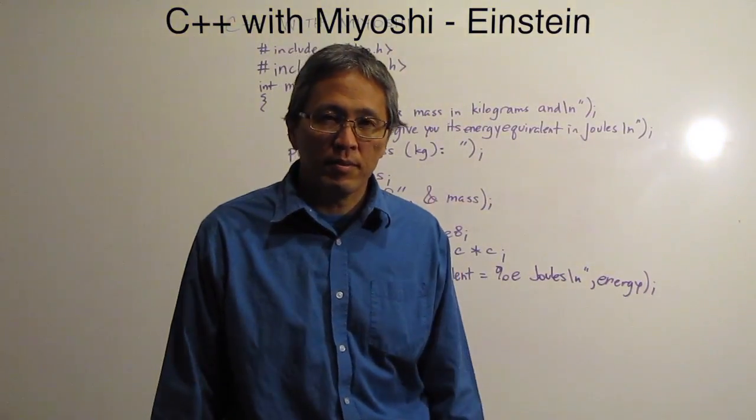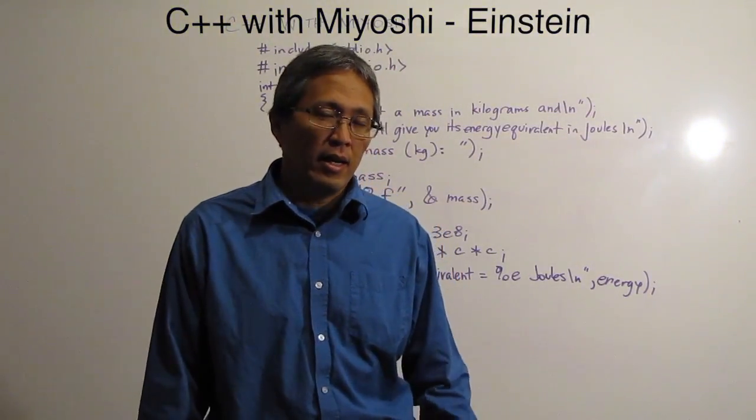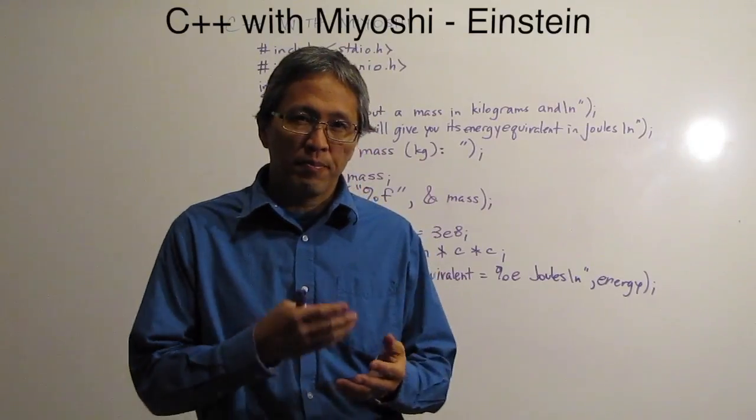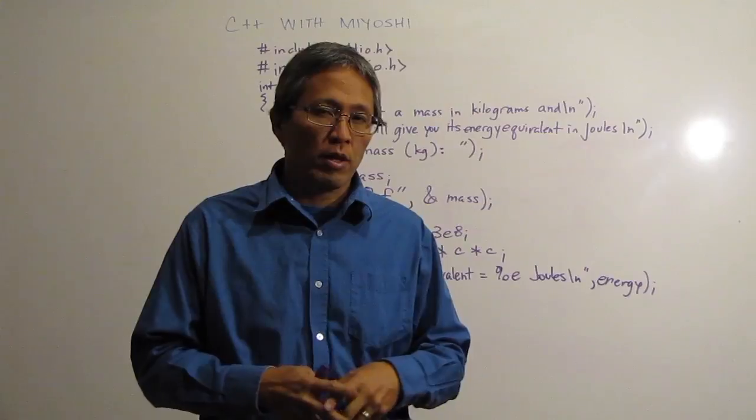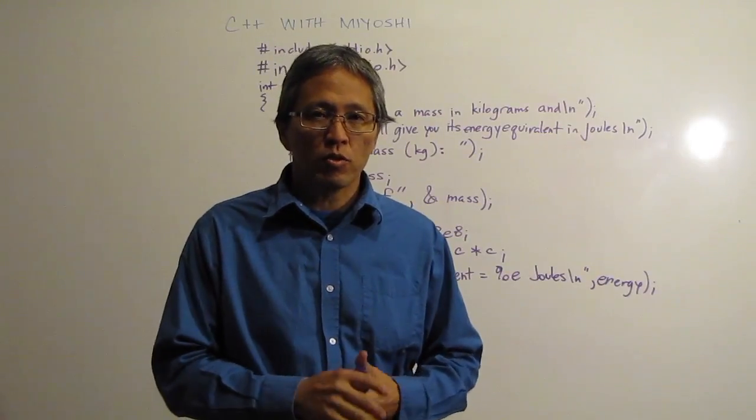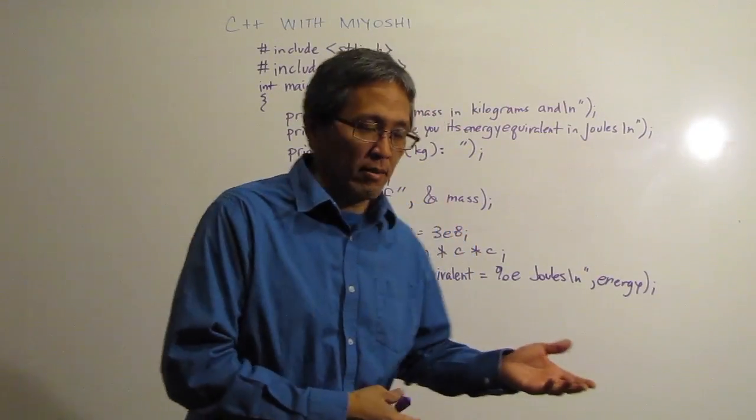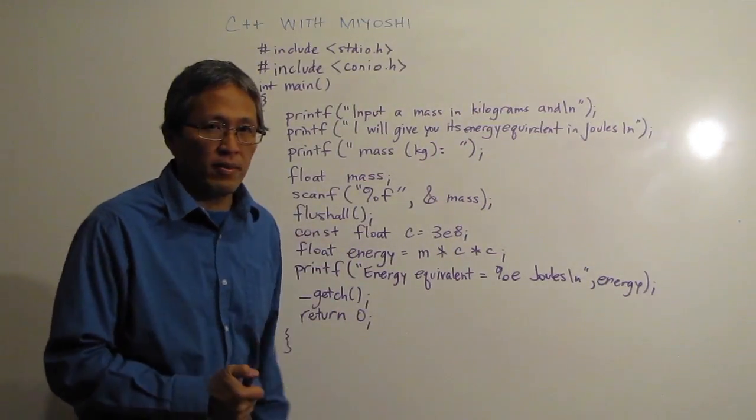Welcome back to C++ with Miyoshi. Today we're going to put together some output, some input, some variables and constants, and we're going to put together a little bit of math and come up with a useful program. So we're going to put all that together and do a little bit of Einstein.